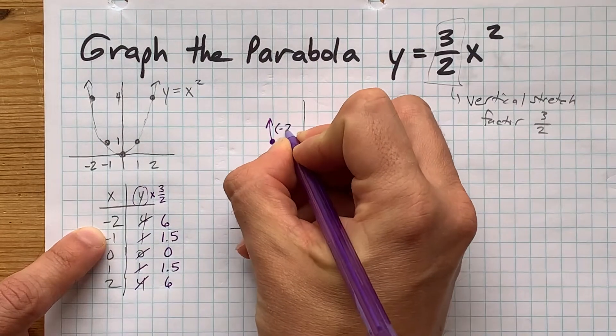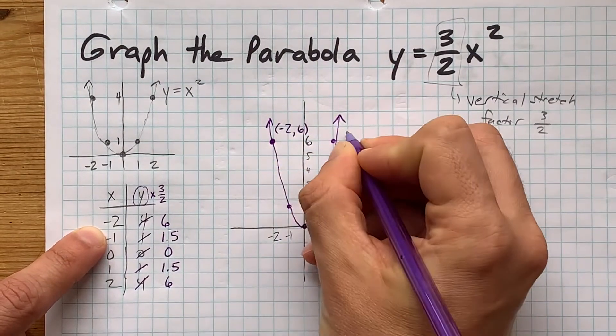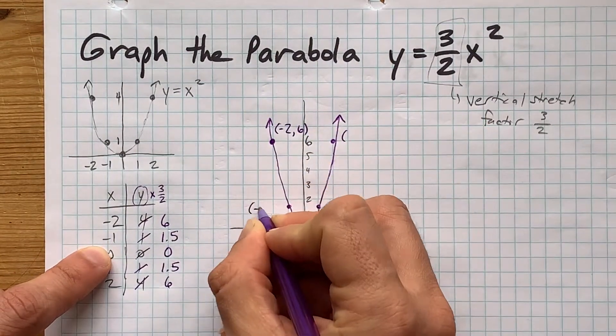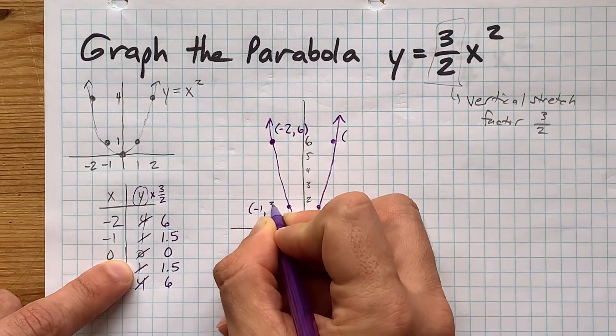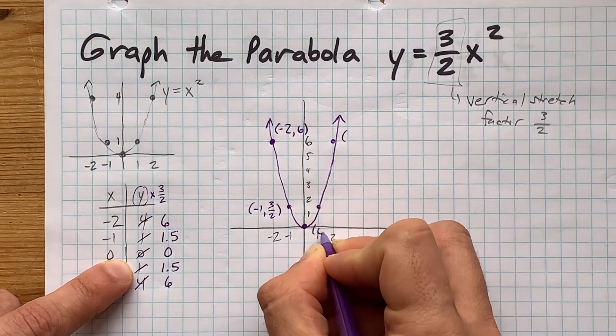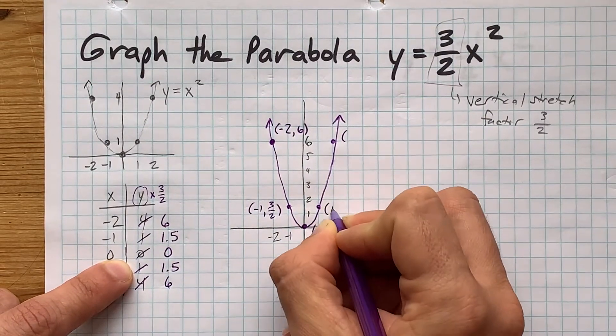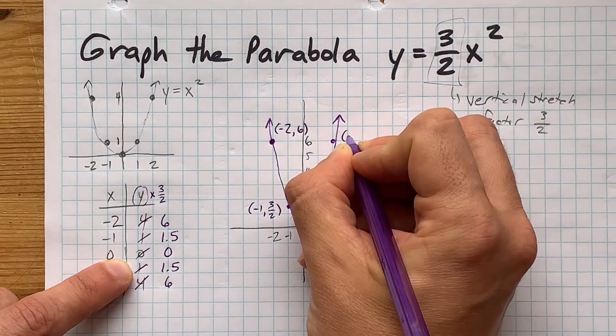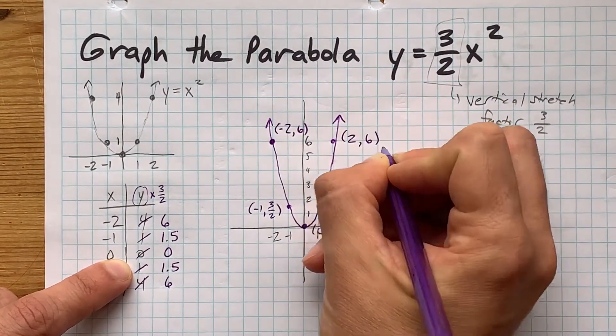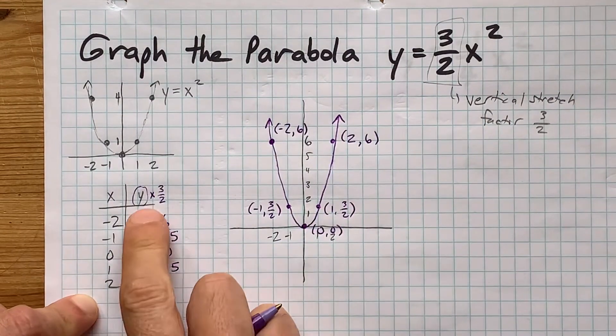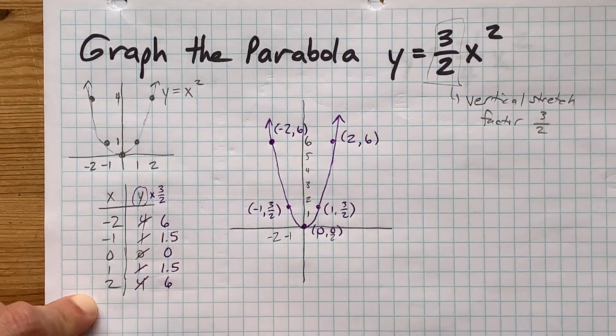Your points are negative 2 comma 6, negative 1 comma 3 halves, 0 comma 0, 1 comma 3 halves again, and 2 comma 6. Saying this from the table of values where we multiplied the y's by 1.5.